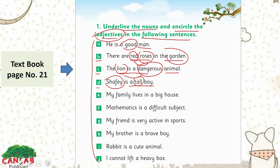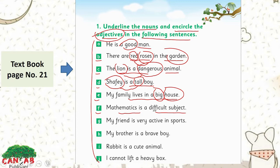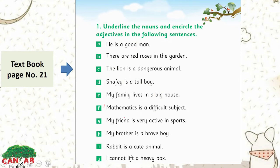Sentence E: 'My family lives in a big house.' The noun is house and big is the adjective — it describes the size of the noun. Sentence F: 'Mathematics is a difficult subject.' Mathematics is a noun and difficult is an adjective which is describing maths. Sentence G: 'My friend is very active in sports.' Friend is a noun and active is an adjective describing the quality of the noun.